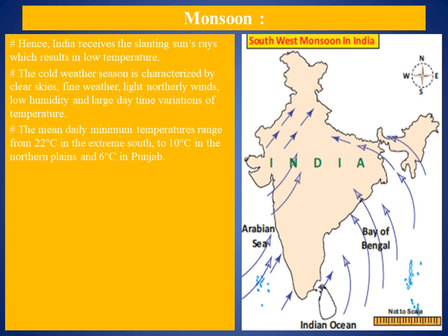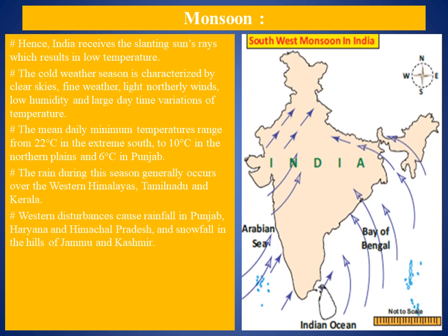Rain during this season generally occurs over the western Himalayas, Tamil Nadu, and Kerala only. Western disturbances and associated troughs in westerlies are the main rain-bearing systems in the northern part of the country. The jet stream plays a dominant role in bringing these disturbances to India. These disturbances cause rainfall in Punjab, Haryana, and Himachal Pradesh, and snowfall in the hills of Jammu and Kashmir. This rainfall is very useful for the cultivation of winter wheat.